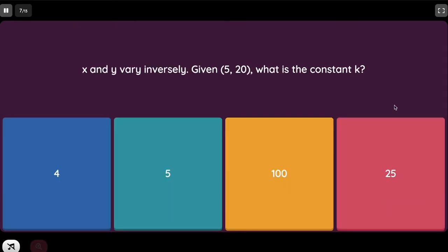x and y vary inversely. Given 5 and 20, what is the constant k? Our equation is xy equals k.